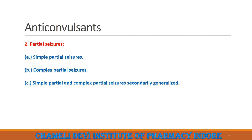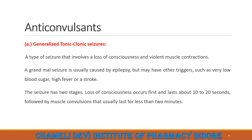This slide will focus on Generalized tonic-clonic seizure. What is a Generalized tonic-clonic seizure? This is a type of seizure that involves a loss of consciousness and violent muscle contractions. A grand mal seizure is usually caused by epilepsy, but may have other triggers such as very low blood sugar, high fever, or stroke. The seizure has two stages: loss of consciousness occurs first and lasts about 10–20 seconds, followed by muscle contractions or convulsions that usually last for less than 2 minutes.